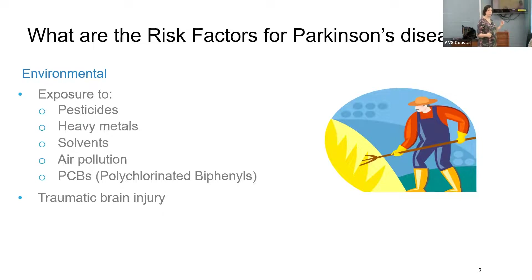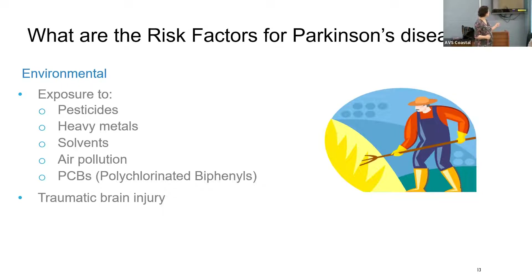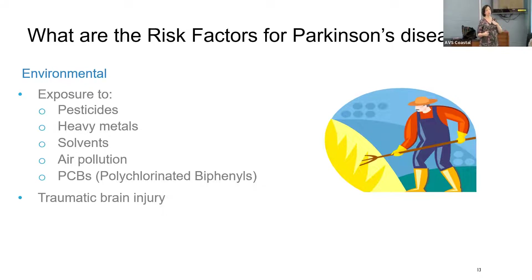Environmental factors are being studied heavily right now. Many of you have seen ads about paraquat exposure. Manganese used to be a major cause — welders got it from high manganese exposure, and that's been removed. Pesticides, herbicides, heavy metals, solvents, air pollution, and polychlorinated biphenyls all have been shown to increase risk in the general population. We think the numbers of Parkinson's disease cases are higher than age alone would predict, and the reason is toxic exposures that have occurred over people's lifetimes.